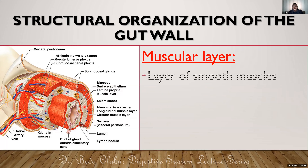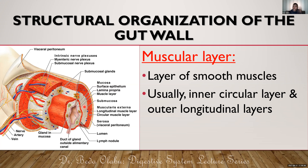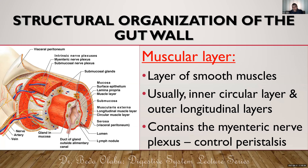The third layer of the GIT wall is the muscular layer — you can call it muscularis propria. The muscularis propria contains smooth muscle, usually in two orientations. The inner ones run in a circular manner — we call it the inner circular layer — and the outer ones run in a longitudinal manner — the outer longitudinal layer. Between those two zones of muscles, there is a nerve plexus.